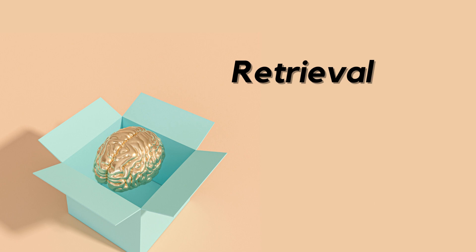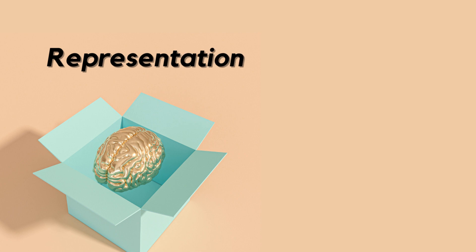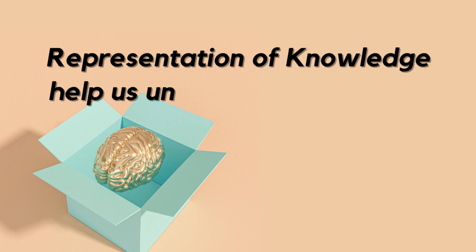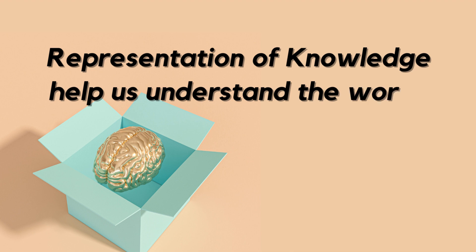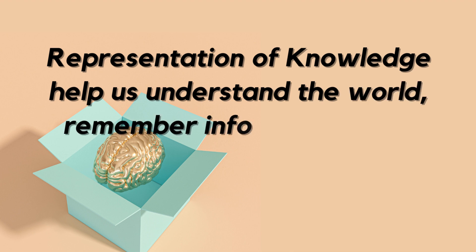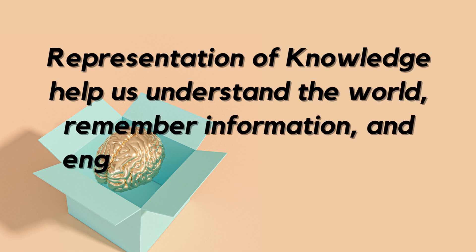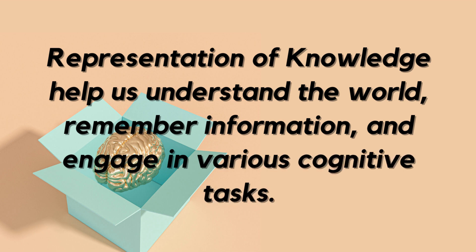In summary, representation of knowledge in cognitive psychology involves the ways in which information is stored, organized and accessed in our minds. It includes mental images, categories, associations, symbols and the ability to retrieve knowledge whenever required. These processes help us understand the world, remember information and engage in various cognitive tasks. Thank you.